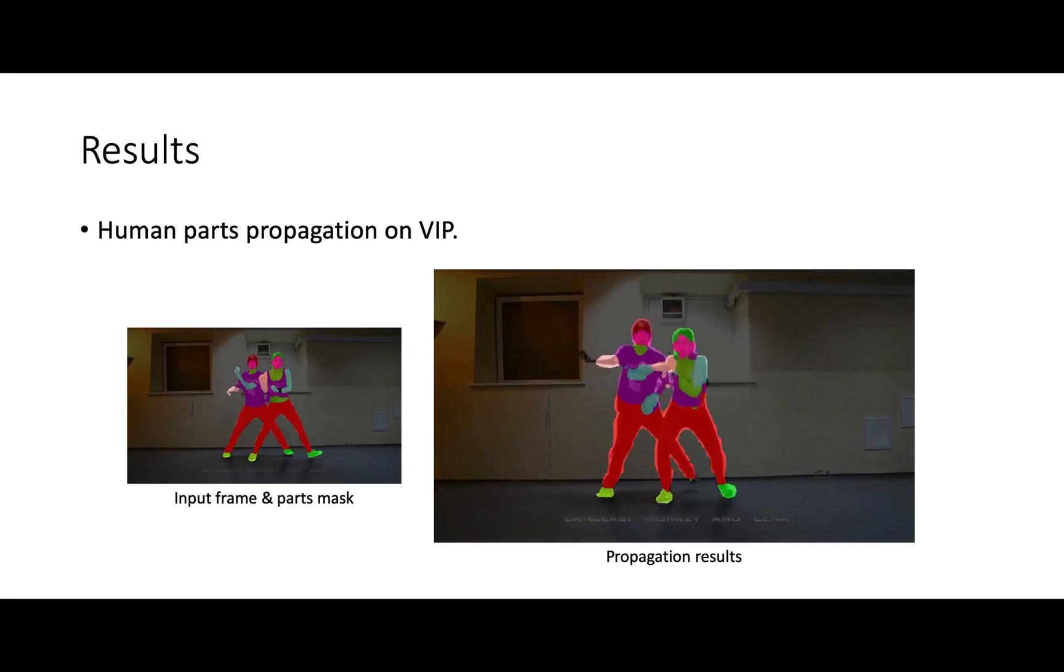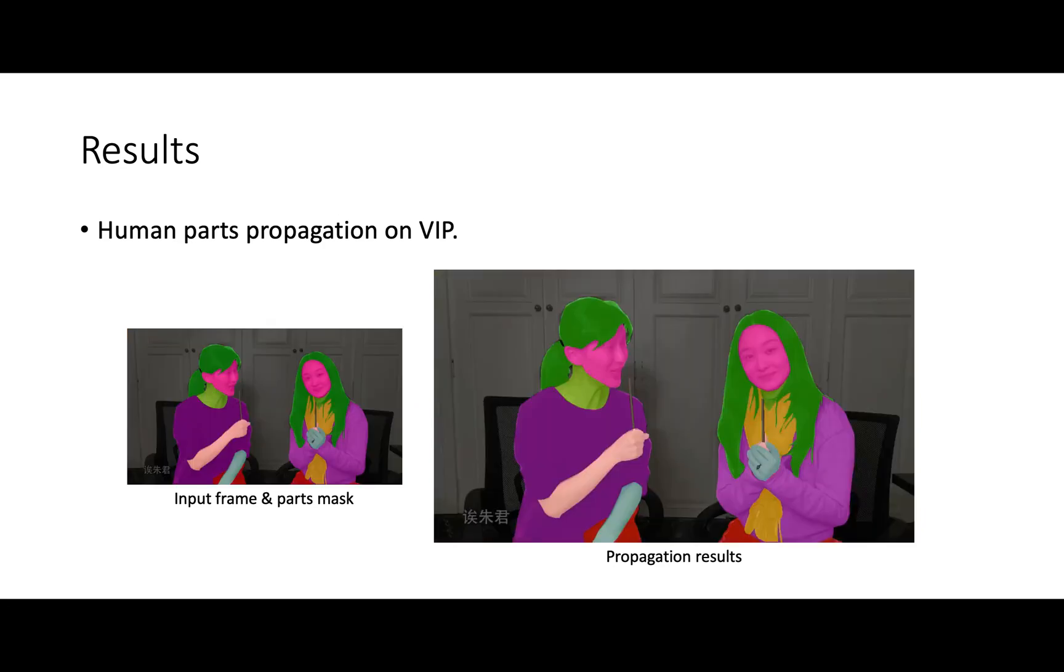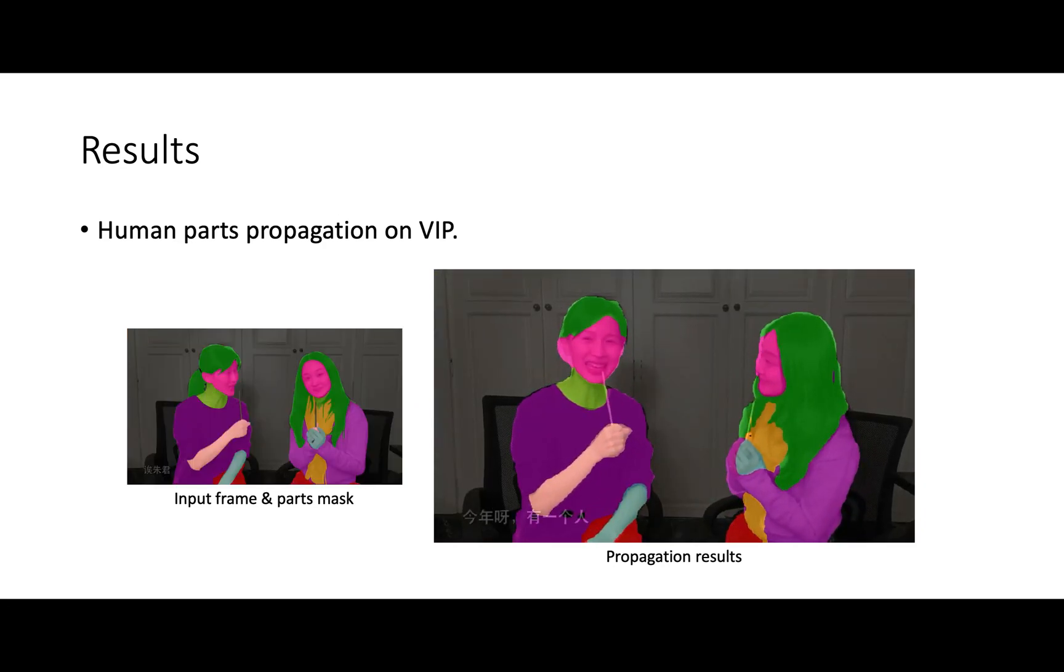We further show examples on human part propagation. Propagating small parts requires more fine-grained details compared to propagating instance masks. Our model is still able to achieve decent results as shown in this video. And here is another example.